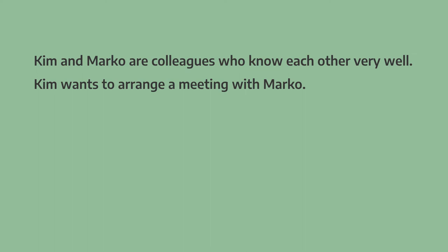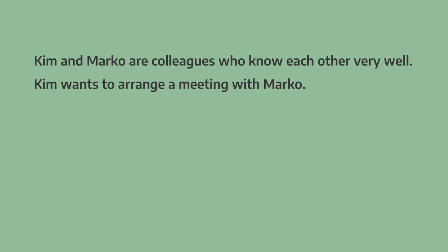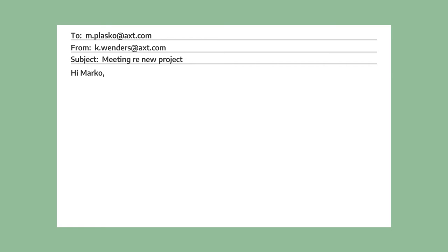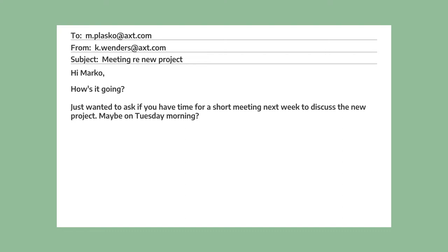Now let's take a look at the informal version. Kim and Marco are colleagues who know each other very well. Kim wants to arrange a meeting with Marco. Kim starts with "Hi Marco" — a very common way to start an informal mail. And then she asks, "How's it going?" — an informal way to say "How are you?" Then she writes, "Just wanted to ask if you have time for a short meeting next week to discuss the new project — maybe on Tuesday morning." So she uses "Just wanted to ask," which is a very informal way to make a request. "Let me know if that works" — a very informal way to ask for confirmation. Then she finishes with "Thanks, Kim."